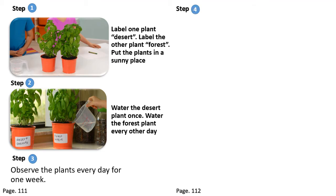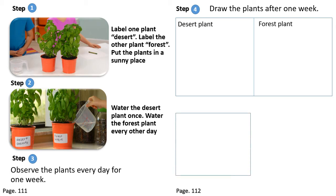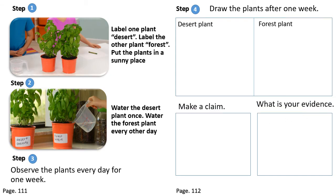To answer this question, let's move on to page 112 where we are going to draw the plants after one week. What do you think will happen to the desert plant? The desert plant is going to wilt after one week, because it did not get the water it needs from the place it lives in. Let's go ahead and draw a wilted plant in the first box.